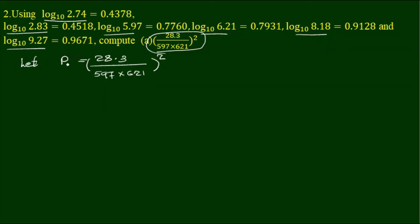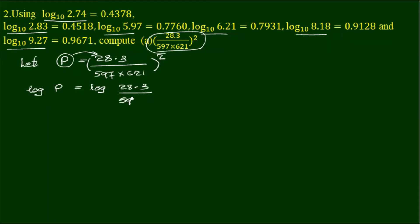The second step is to take the two — the whole square. Log 28.3, 5, 5, 9, 7, and 2, 6, 2, 1 — the whole square.